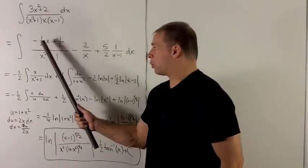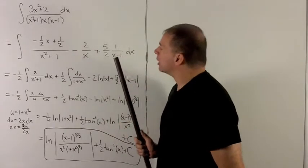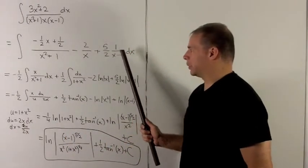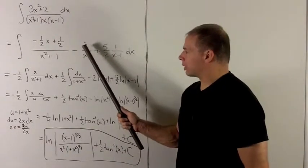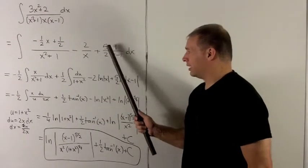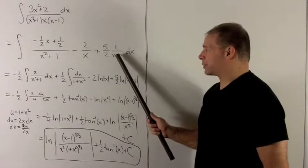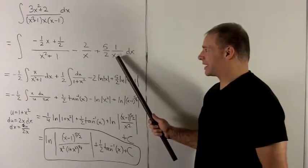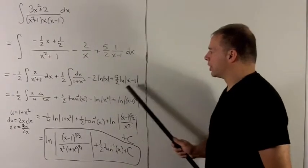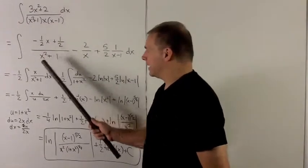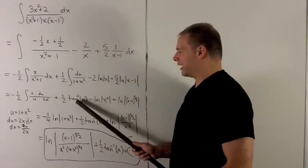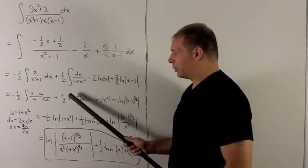Now we have four pieces to integrate. Breaking into separate indefinite integrals: the −2/x term integrates to −2 ln|x|, and the (5/2)/(x−1) term, using the substitution u = x − 1 with du = dx, integrates to (5/2) ln|x − 1|. These two terms are taken care of.